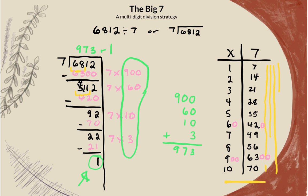So, here was our big 7. This time, dividing a 4-digit dividend by a single-digit divisor.